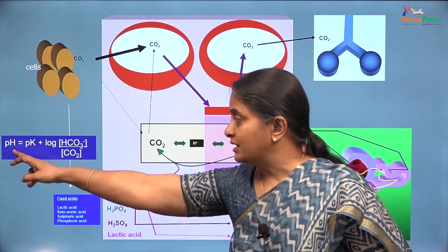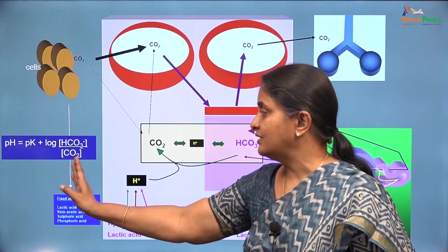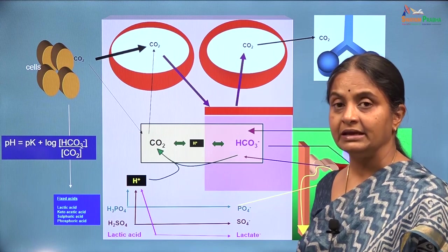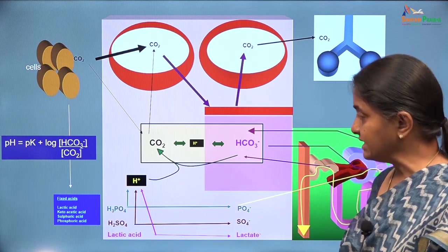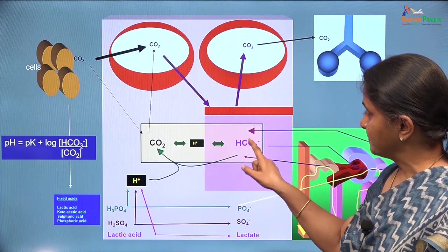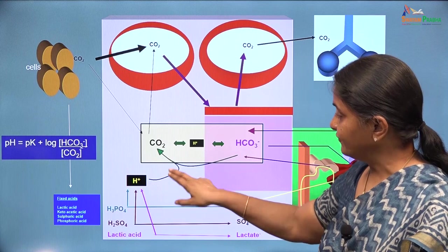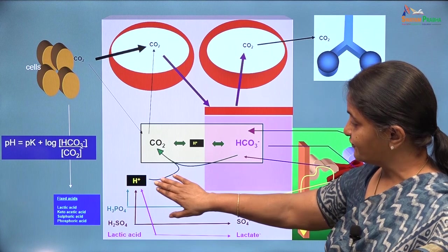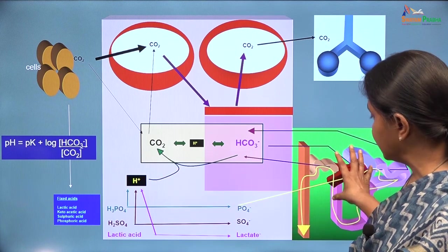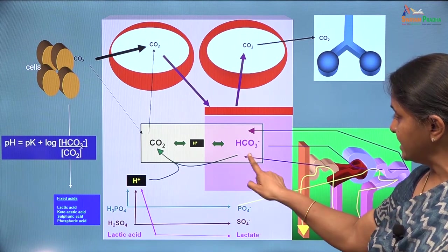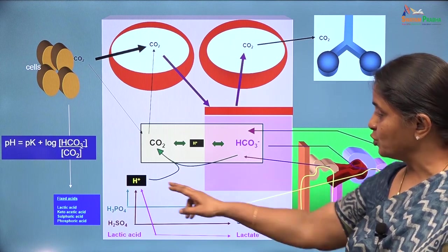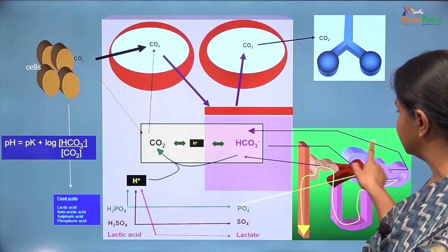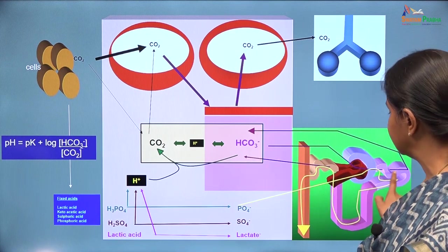pH will at least be slightly higher even if there is respiratory compensation. We have already seen that serum bicarbonate is essential for handling the fixed acids and the source of bicarbonate which buffers the fixed acid protons is the kidney. The distal tubule generates bicarbonate to replace whatever has been consumed by the fixed acids. In addition, the proximal tubule is involved in reabsorption of filtered bicarbonate.